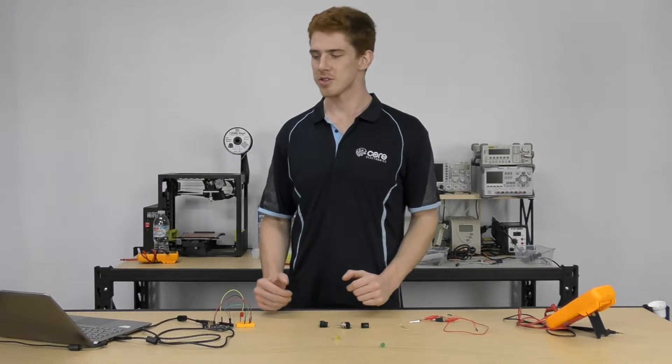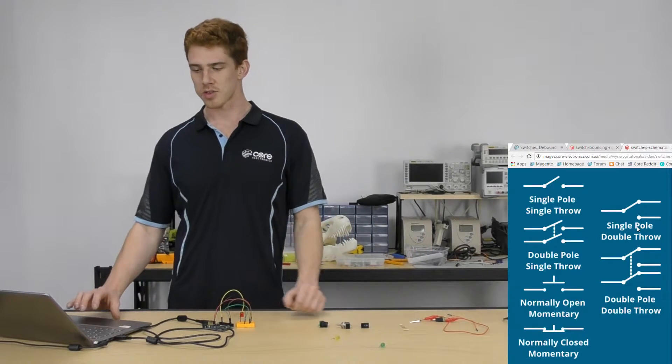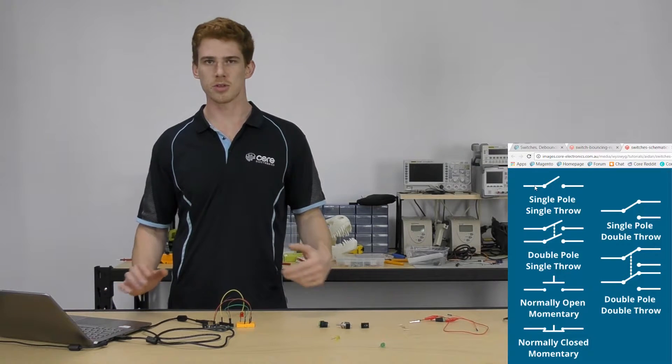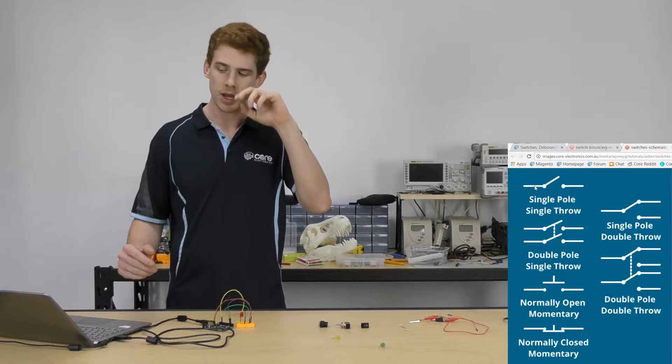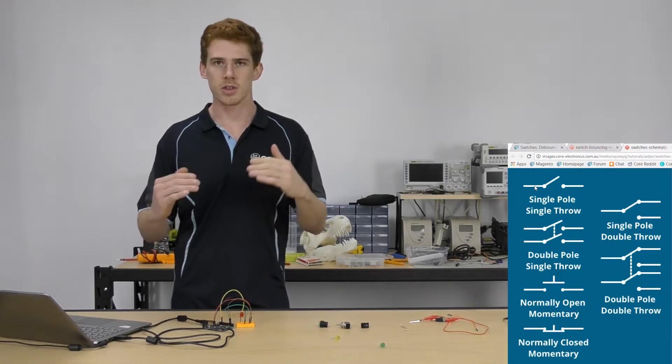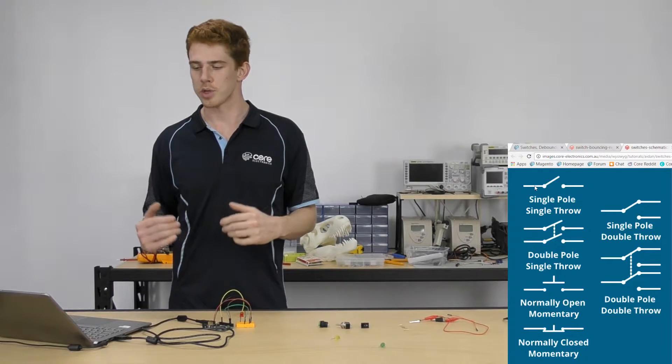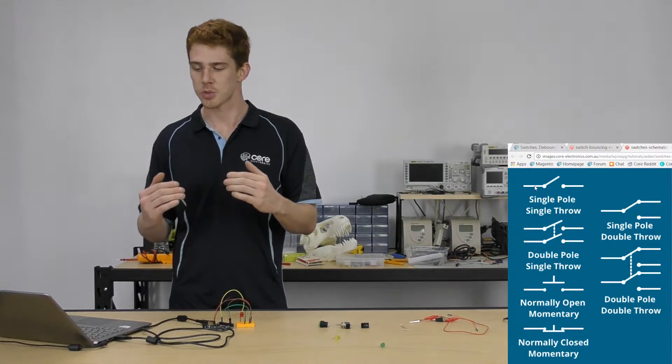Some of the important things to look out for with switches can be found on this nice little diagram here. We've got different poles and throws of a switch. The poles actually refer to the amount of circuits you can control, and if you look at the schematic it's pretty representative of that. You've also got the throw, which is the amount of positions that each switch can take.